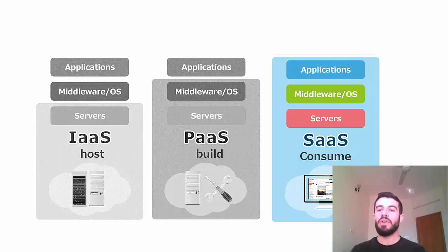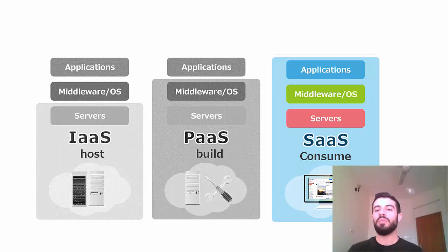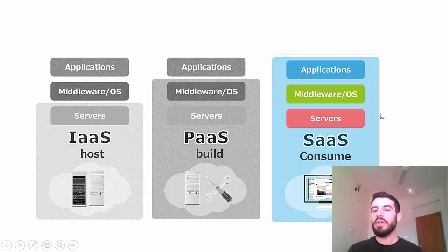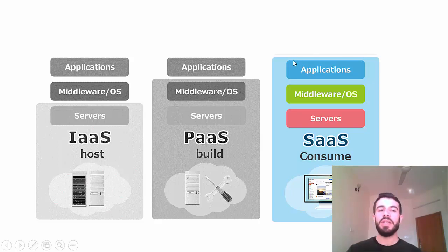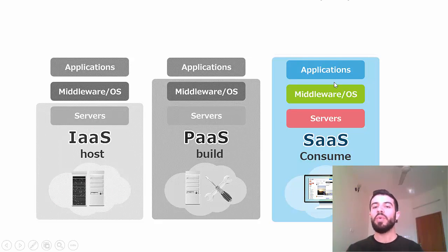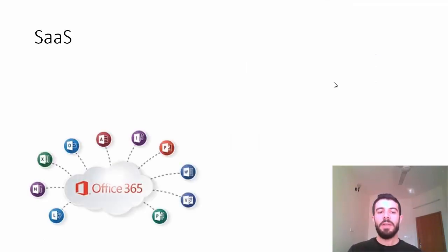In SaaS, I'm just using the software that is installed on the server — for example, Google Translator or Microsoft Word. Instead of it being installed on my computer, I'm using it from the remote computer. So SaaS works with applications. It includes the operating system on the server, but specifically we're just using the application. We pay for the application. Examples of software as a service include Office 365, which is what this course is about. It is one type of Software as a Service.